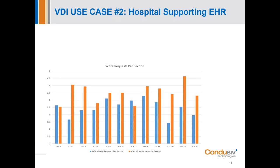Let's take a quick look at what IO transformation with Velocity can do. We can validate this with third-party tools like you probably already have in your environment — like vROPS or vSphere. vROPS was what was used in this particular hospital case. The orange lines indicate what the measurements were with Velocity, and as you can see, there's a pretty nice trend of improvement on write requests per second. Let's go to the next slide to elaborate a little bit more.